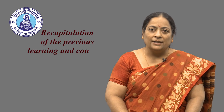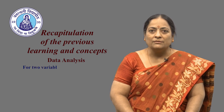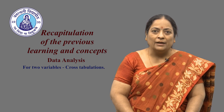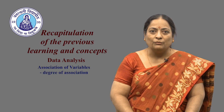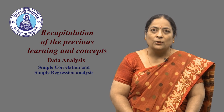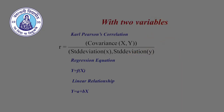In the previous lectures, we have seen the data analysis that covers descriptive statistics for a single variable. For two variables, we may attempt cross tabulation. One way we may be interested is the association of variables — the extent of relationship between two variables. If we have two variables, then simple correlation and simple regression analysis can be used. Carl Pearson's correlation coefficient measures the extent of correlation between the two variables, where one variable is dependent and another is independent.